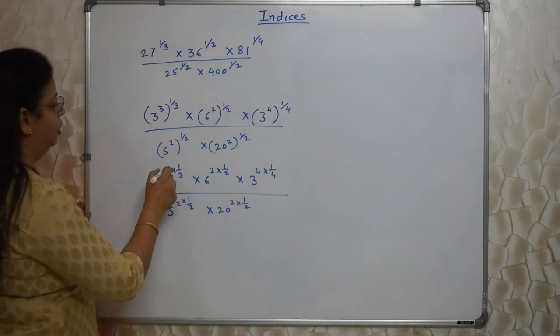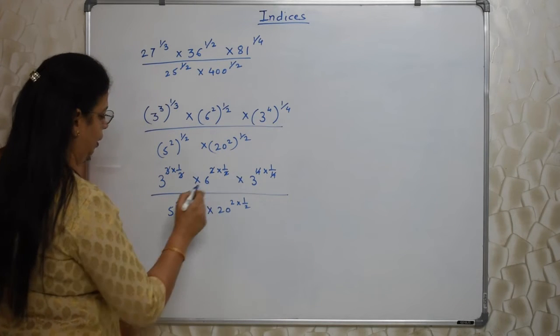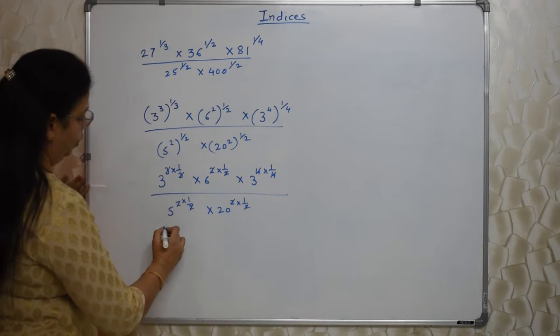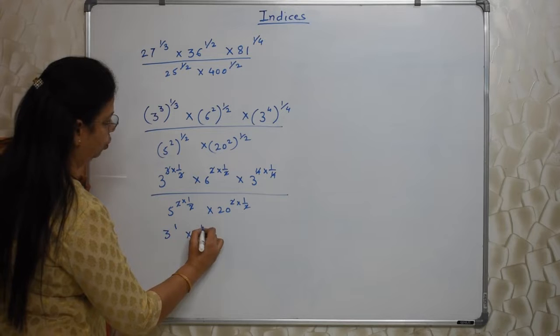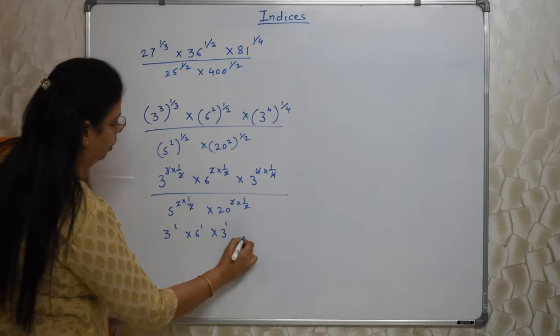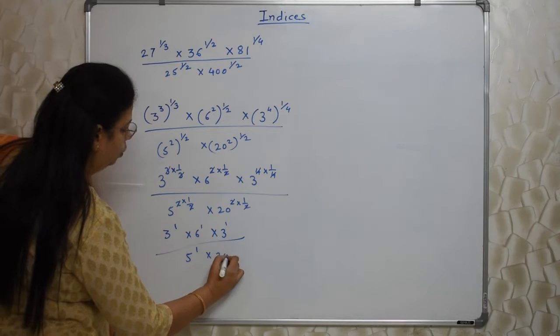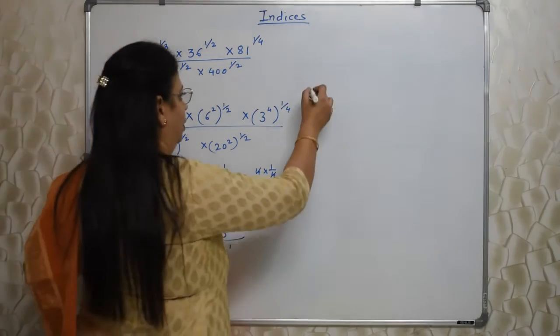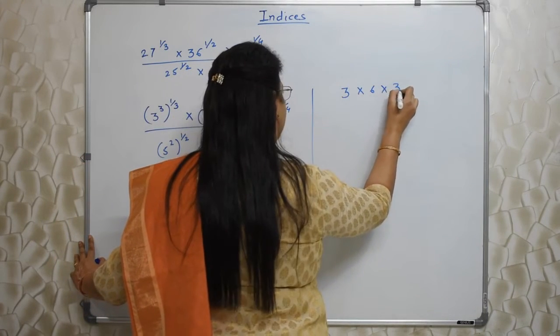Now brackets we have removed. This 3 will go with this, 2 with this, 4 with this, 2 with this. So what will remain? 3¹, 6¹, 3¹, 5¹, and 20¹. So this raised to 1 I need not write. I can straight away rewrite this as normal numbers.